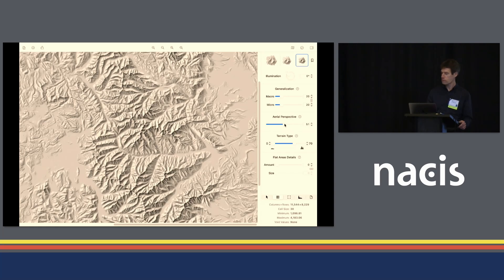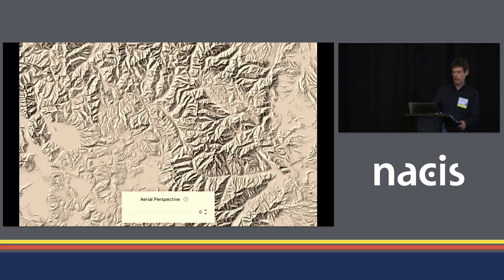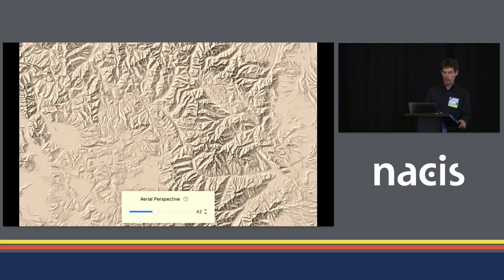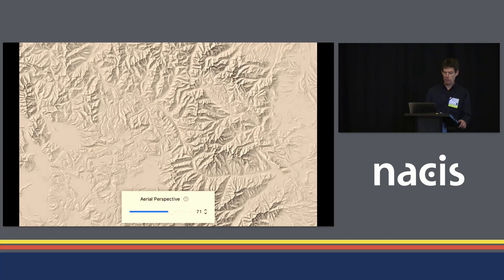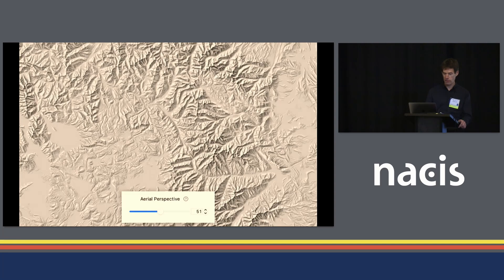That was a bit fast, so let's recap. This image is without any aerial perspective — very strong contrast throughout. Then we increase aerial perspective. This is the maximum we can apply, and as I said, a value of 50 usually works quite nicely.